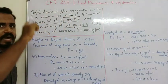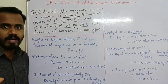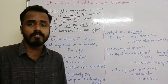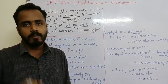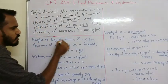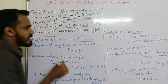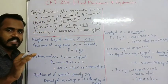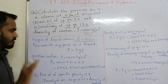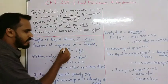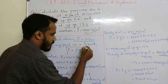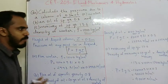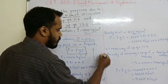We are going to use the same height Z for all three fluids. The height of the liquid column is Z equal to 0.3m. The pressure at any point is given by the expression P equals rho times g times Z.